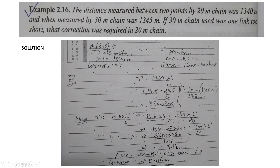The answer is: incorrect length L' minus correct length L. Incorrect length is 19.94, correct length is 20 meters. So this comes to minus 0.06. Remember the formula to find the error: incorrect length minus correct length. This gives us negative 0.06 meters as the error.